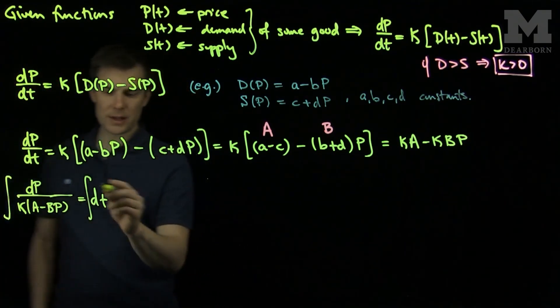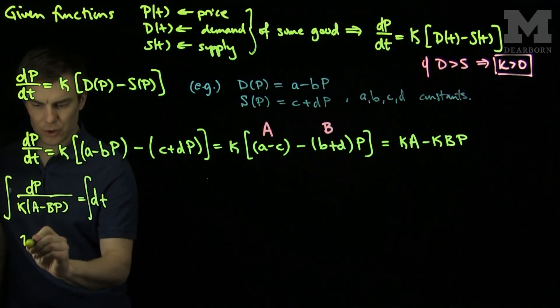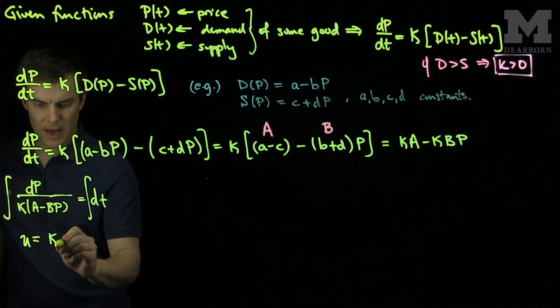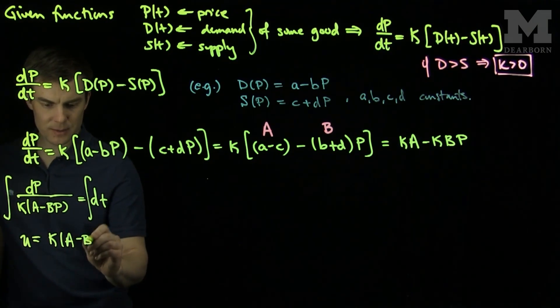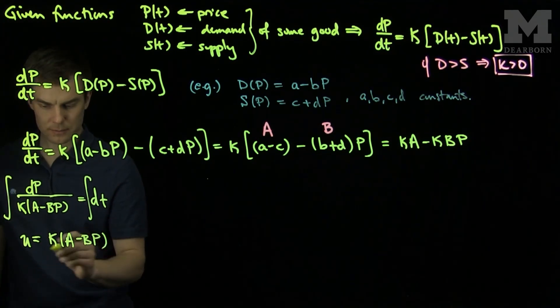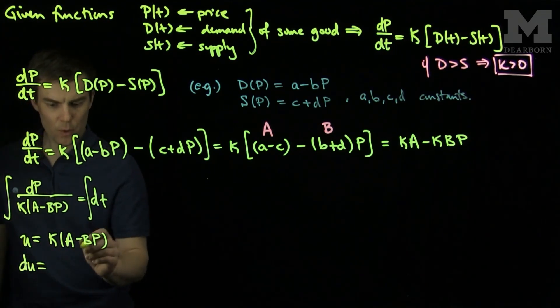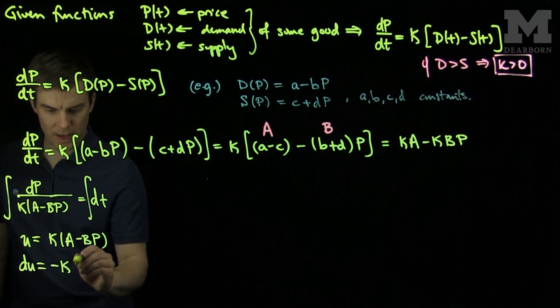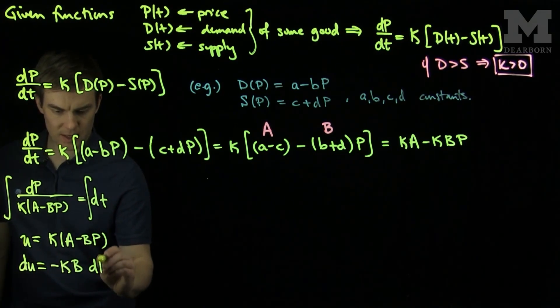Now, to do the dt integral, that's simple. To do the dP integral, we'll make a substitution. We will let u be KA minus Bp. And so my du will just be a negative KB dp.